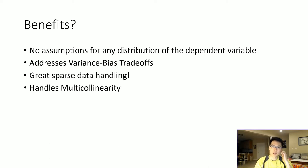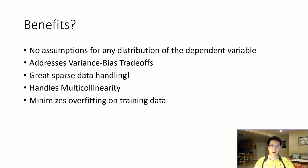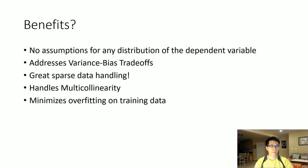It also handles multicollinearity, because that's one of the main perks of using lasso, and lasso is inside of elastic net, so elastic net has all those benefits. It also minimizes overfitting on training data, which is a huge perk when you're testing out models to identify which features are most attributable to the prediction outcomes, thereby creating a more robust model to use in the future. And also, it's easy to interpret.